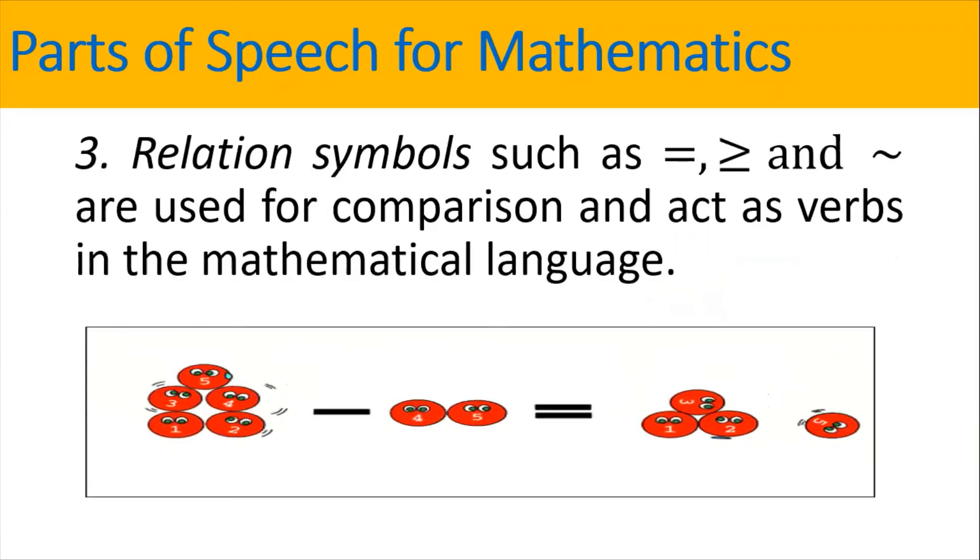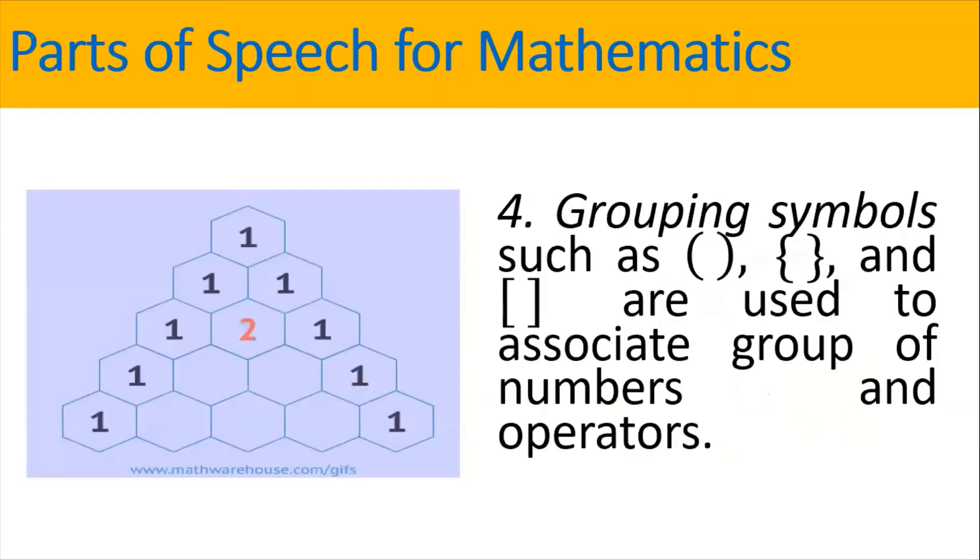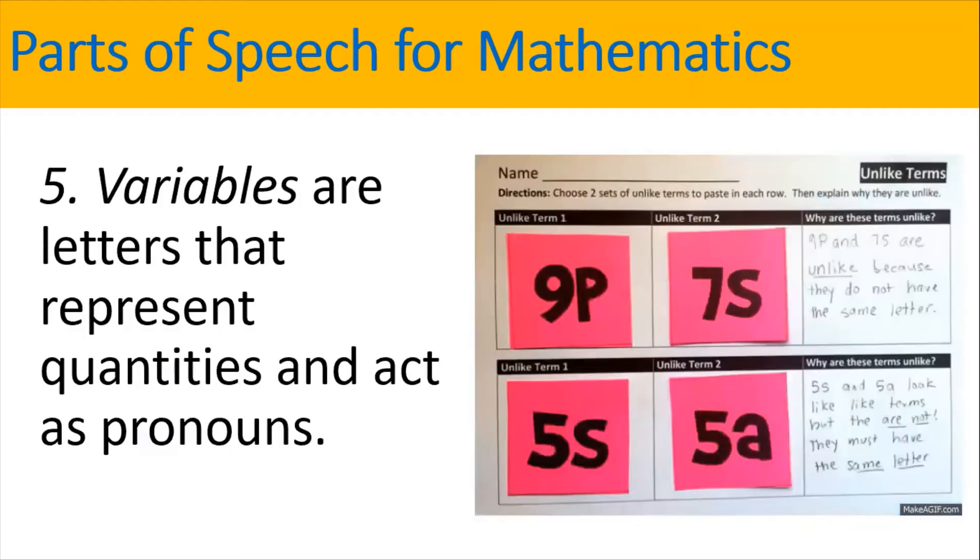Relation symbols such as equality, greater than, or equal to, and tilde are used for comparison and act as verbs in a mathematical language. Grouping symbols such as parenthesis, braces, and brackets are used to associate group of numbers and operators. Variables are letters that represent quantities and act as pronouns.